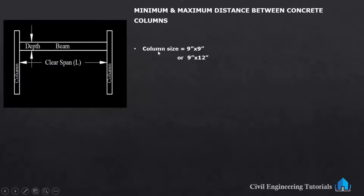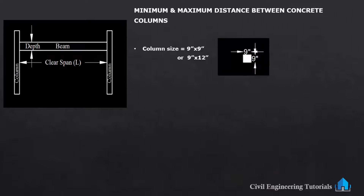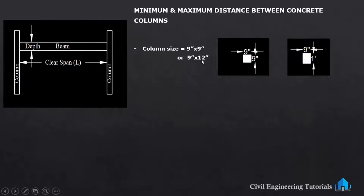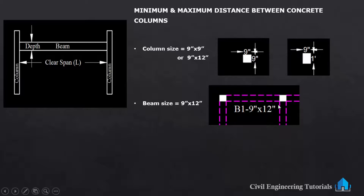Now, what is the column size? The column size should be 9 inch by 9 inch or 9 inch by 12 inch. You can keep 9 inch by 9 inch, and sometimes for making the structure stronger you can keep 9 inch by 12 inch. Here you can also see the beam: the width is 9 inch and the depth is 12 inch, so the beam size is 9 inch by 12 inch.